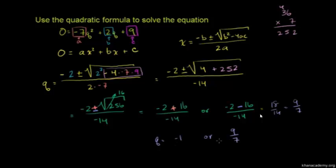You could substitute these q's back into the original equation and verify they satisfy it. Let's check the first one. If q = -1: -7(-1)² + 2(-1) + 9. -1² is 1, so -7(1) = -7. -1 × 2 = -2. So -7 - 2 + 9 = -9 + 9 = 0. This checks out. I'll leave it to you to verify 9/7 also works.